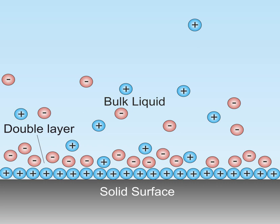This second layer is loosely associated with the object. It is made of free ions that move in the fluid under the influence of electric attraction and thermal motion rather than being firmly anchored. It is thus called the diffuse layer.